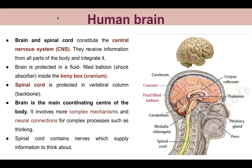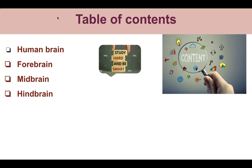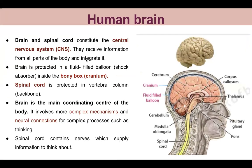So let's start with the human brain. Our human brain is divided into three parts: forebrain, midbrain, and hindbrain. The human brain and spinal cord together form what we call the central nervous system - the CNS.